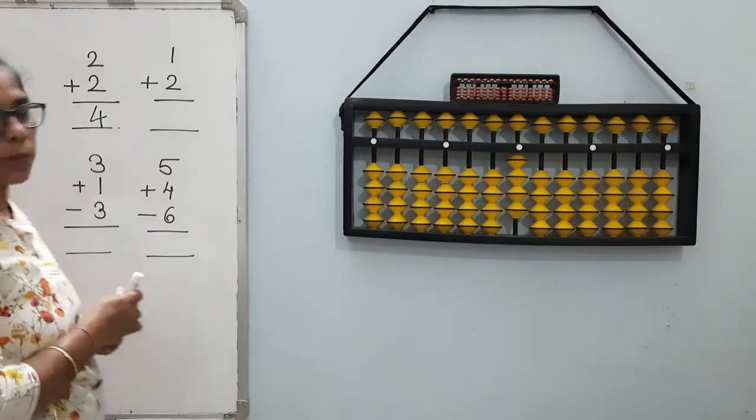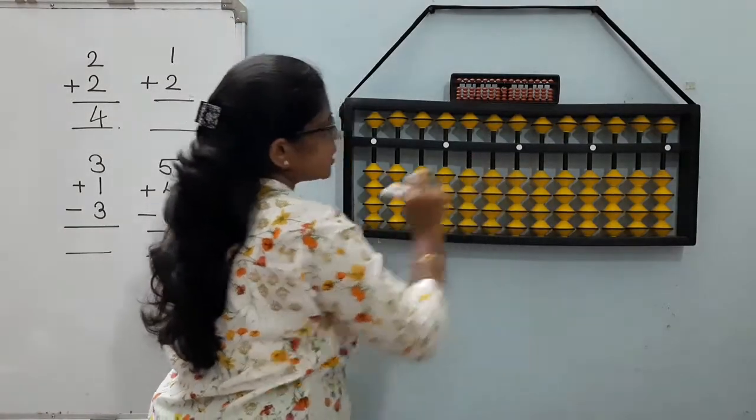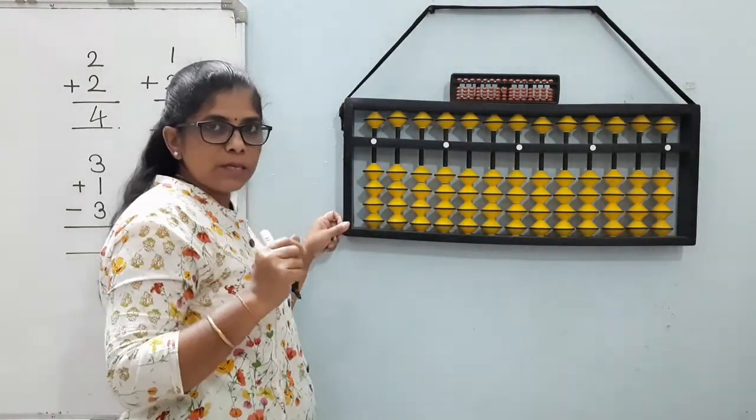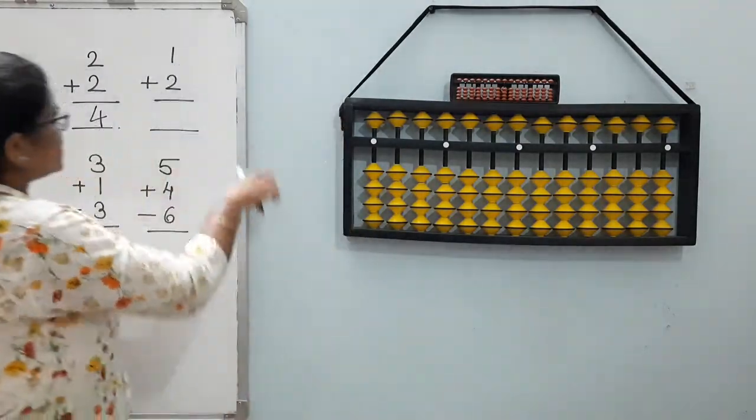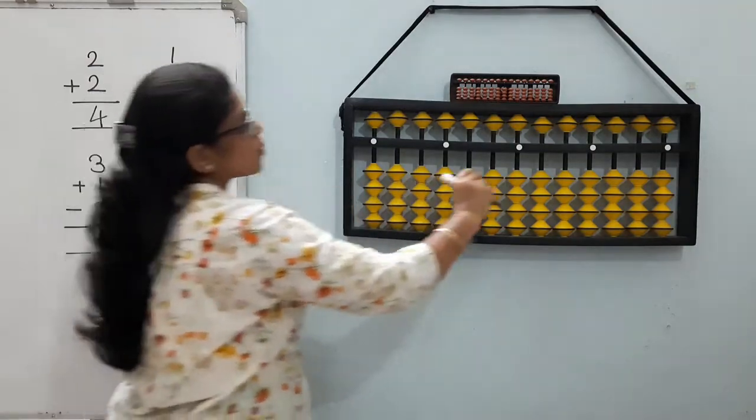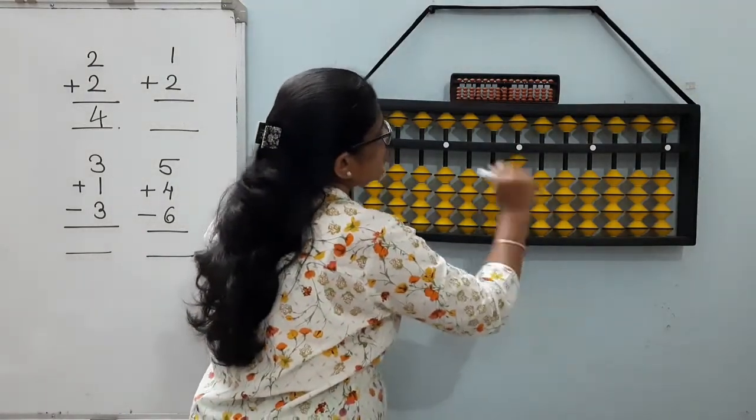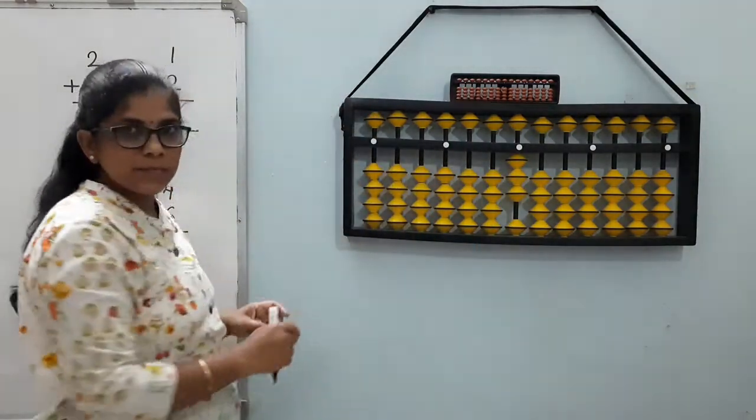Next, 1 plus 2. Let us make 0 first. Always before solving the next sum, we have to clear the abacus. We have to make the value 0 on the abacus. So what is our next sum? 1 plus 2. 1 and 2. Answer is 3.